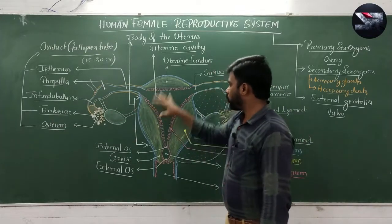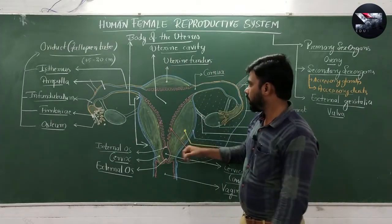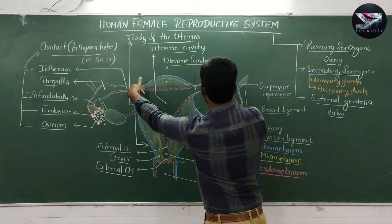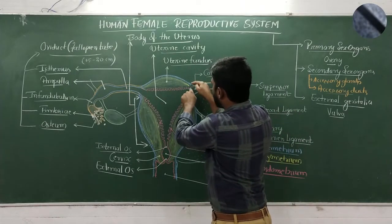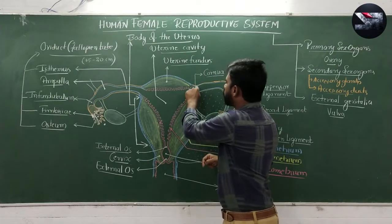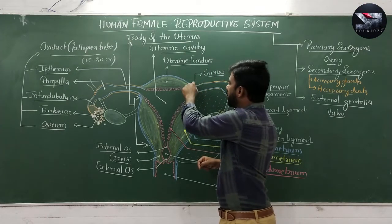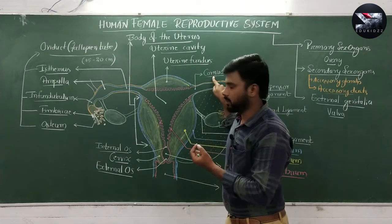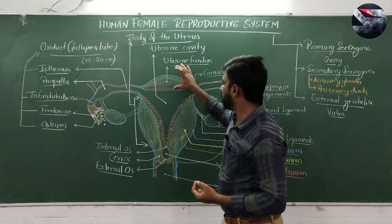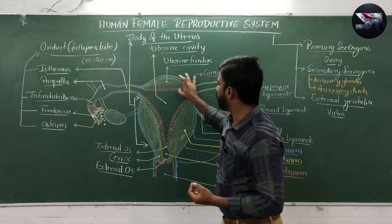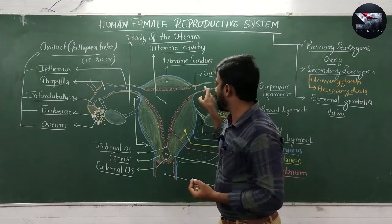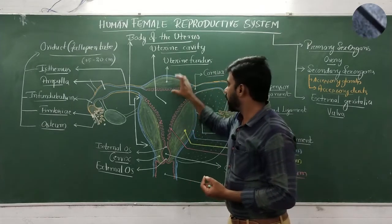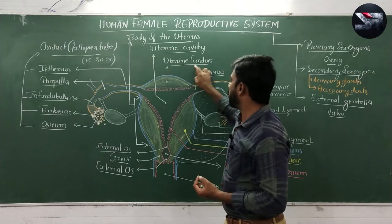The oviduct is followed by the uterus. The upper two corners where the oviduct exactly joins the uterus are called the cornua. The bulged portion of the uterus at the union with the fallopian tube is called the fundus.